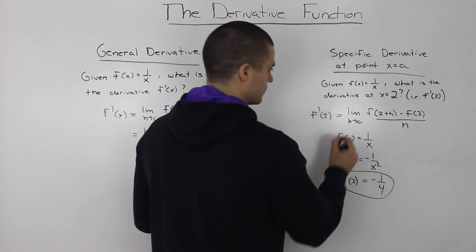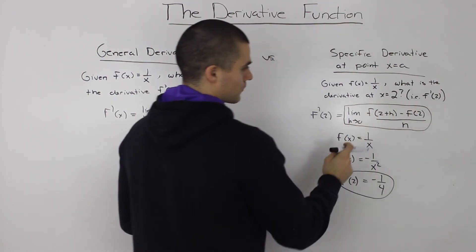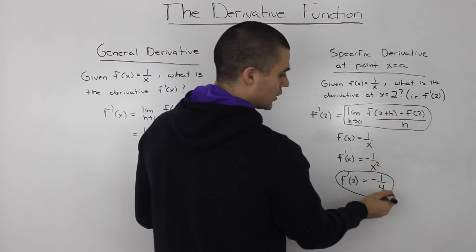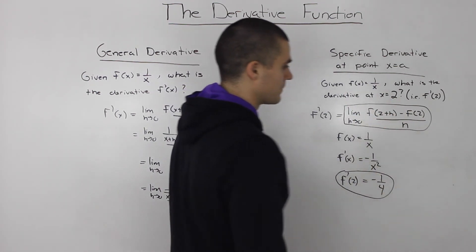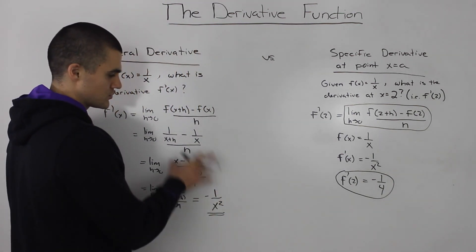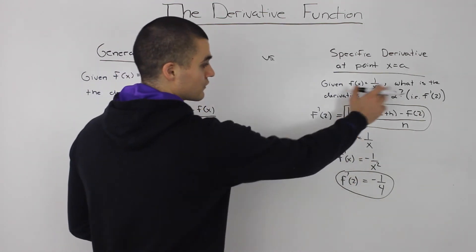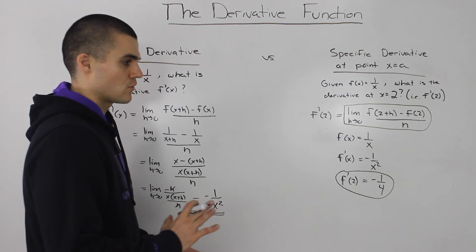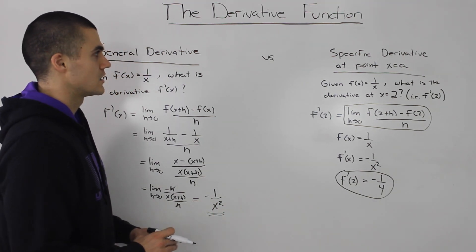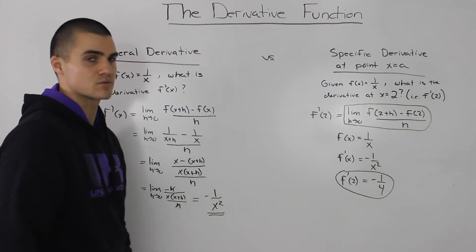So these two—if you were to do algebra on this, plug in 2 plus h for x here and then 2 for x and do all the algebra, you would end up with negative 1 over 4. But it's just a lot easier to find the general derivative, right? Do the algebra here and then you can just plug in your 2 for x and you'll get the derivative at a specific point. So be careful with what they're asking you. Know how to differentiate whether they're asking you for a general derivative or a specific derivative at point x equals a.